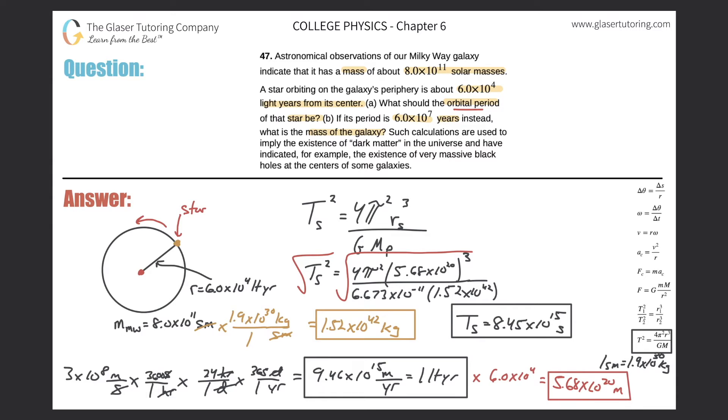I love doing conversions. So here we have 6.0 times 10 to the 7th years. Let's convert that into seconds. Year on the bottom, day on the top: 365 to 1. Let's go to hour next, so days on the bottom, hour on the top: 24 hours in a day. Then we can go right from hours to seconds, knowing that there's 3600 seconds in an hour. Let's calculate the answer: 6 times 10 to the 7th times 365 times 24 times 3600. Our period here is going to be 1.89 times 10 to the 15 seconds.